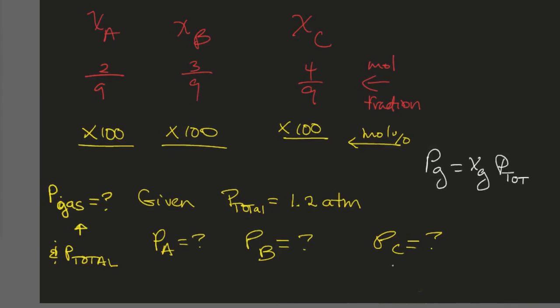This will be two ninths times 1.2, this one would be three ninths times 1.2, and then four ninths.